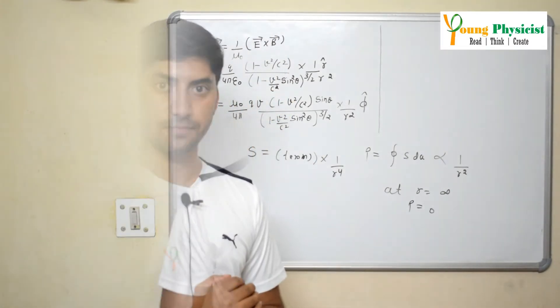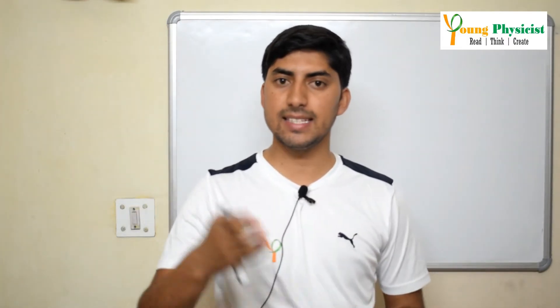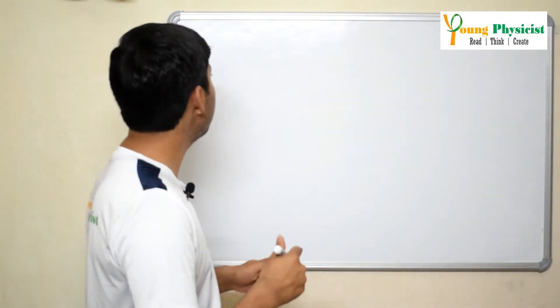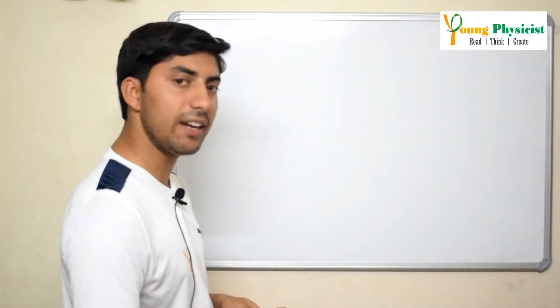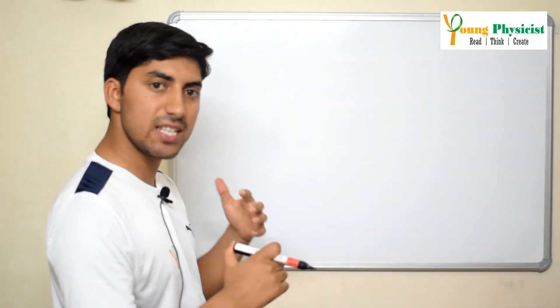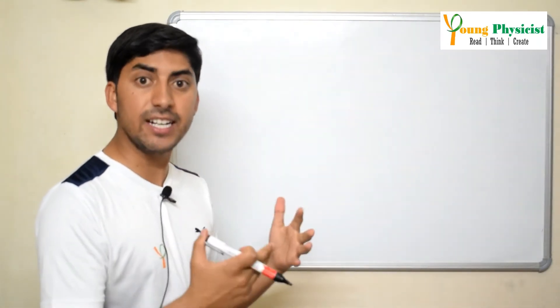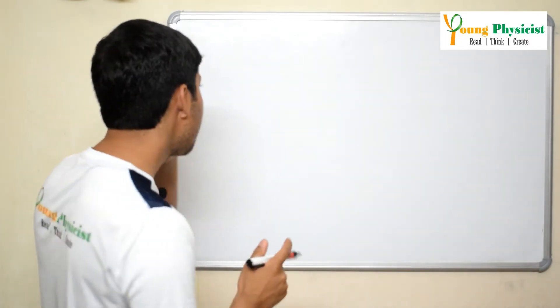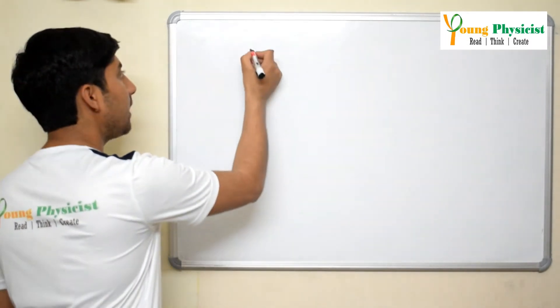Now let's look at the case when the charge particle is accelerated. The expressions for the electric field and magnetic field for a charge particle which is accelerated by acceleration a are given by the following expressions.